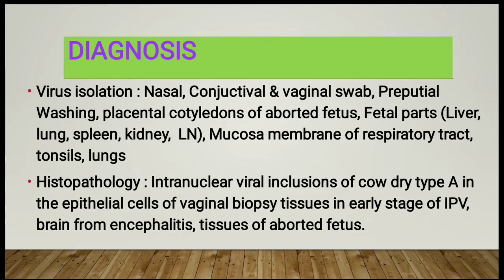For diagnosis, the virus can be isolated through nasal, conjunctival, and vaginal swabs. Preputial washing can also be used for virus isolation samples. Placental cotyledons of the aborted fetus and fetal parts like liver, lungs, spleen, kidney, lymph nodes, and mucous membranes of the respiratory tract, tonsils, and lungs can also be good sources of virus. On histopathology, intranuclear viral inclusions of Cowdry type A in epithelial cells of vaginal biopsy tissue are seen in early stages of IPV. Brain tissue from encephalitis cases and tissues of aborted fetus can also be used for histopathological examination.